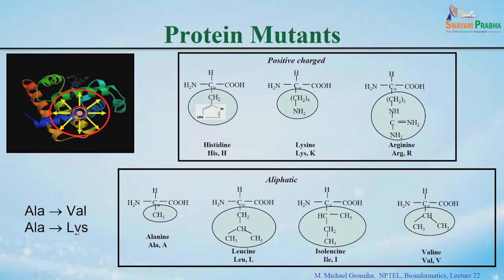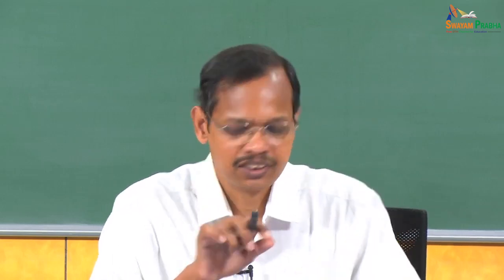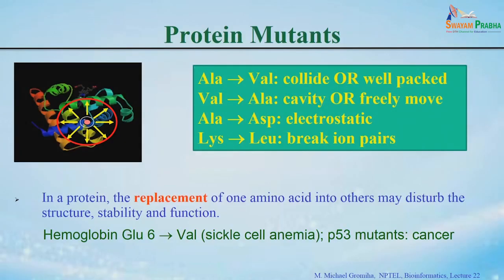If you mutate alanine to lysine, will this stabilize or destabilize the protein? It will destabilize the protein if it is in the buried state. If it is located in the exposed region and there is a nearby residue like aspartic acid or glutamic acid, then it can make salt bridges. If you mutate alanine to valine, either this will make a steric hindrance or it can be well-packed depending upon where the alanine is located and how much space is available nearby.